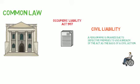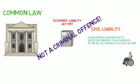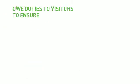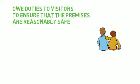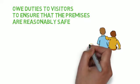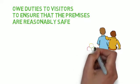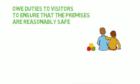A breach of this Act is not a criminal offence. Occupiers of premises owe duties under the Occupier's Liability Act 1957 to visitors, to ensure that premises are reasonably safe for the purpose for which the visitor has been invited. The occupier must also expect children not to be as careful as adults, but is allowed to assume that persons with specialist skills, such as electricians, should be aware of the hazards associated with their work and take adequate precautions.